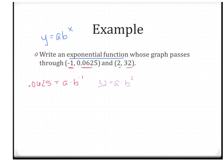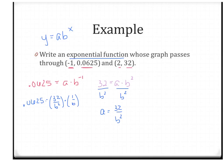There are a few ways to solve these, but substitution is probably your best bet. Let's solve the second equation for a by dividing by b², giving a = 32/b². Now substitute that into the first equation. Writing b^(-1) as 1/b, we get 0.0625 = (32/b²)·(1/b), which simplifies to 0.0625 = 32/b³.